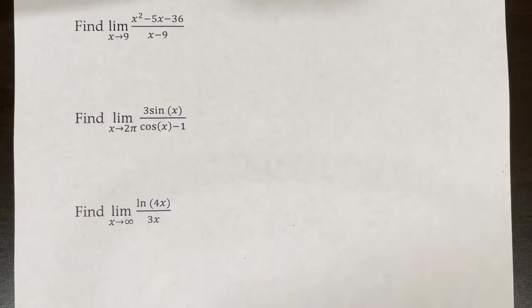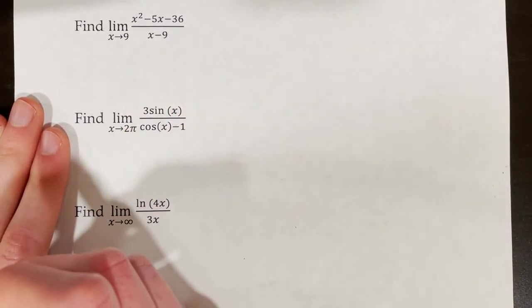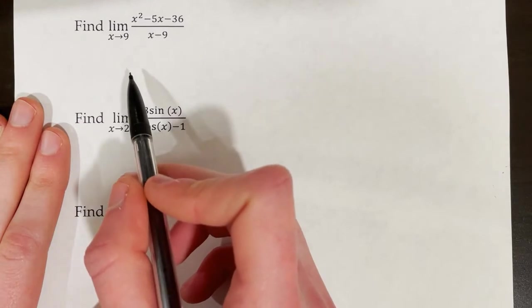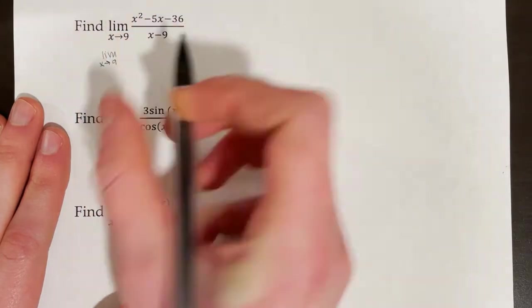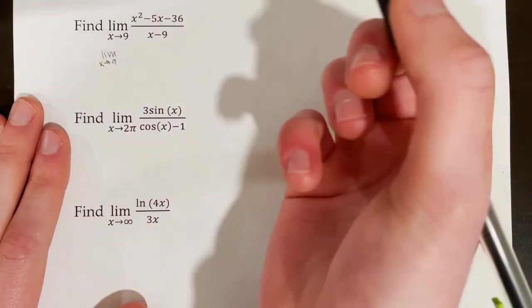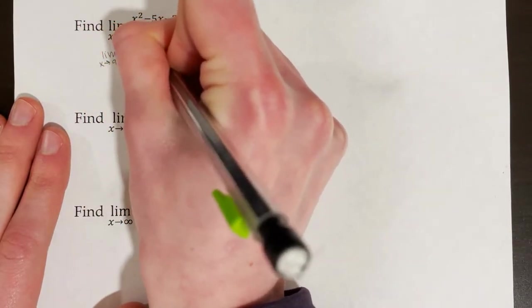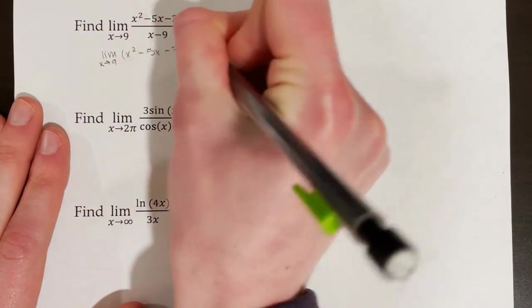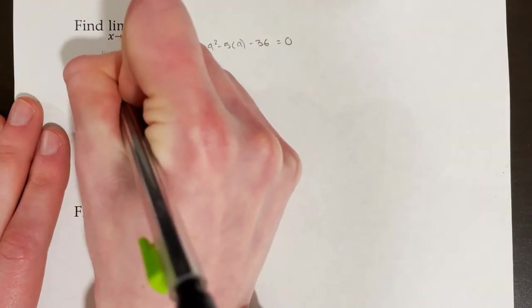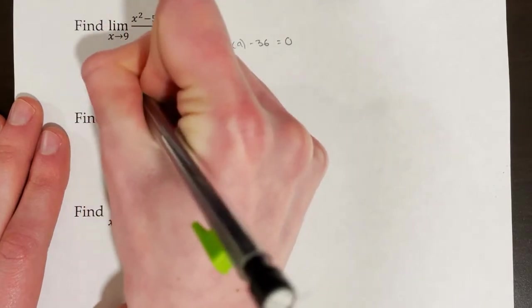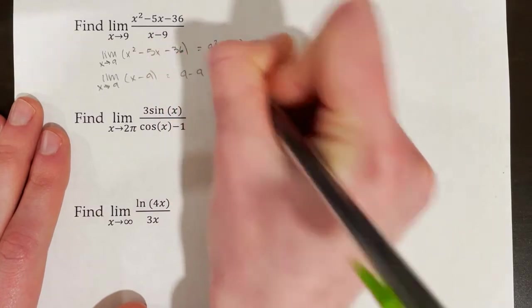Let's practice another example: find the limit as x approaches 9. Before applying L'Hôpital's rule, we verify the conditions. We check the numerator: the limit as x approaches 9 of x² − 5x − 36 using direct substitution equals 0. Now the denominator: the limit as x approaches 9 of x − 9 gives 9 − 9 = 0.